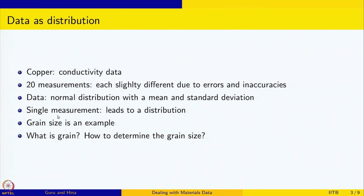However, sometimes a single measurement leads to a distribution of values. Grain size is an example. We will look at what is a grain and how do we determine grain size — that is what we will look at now.